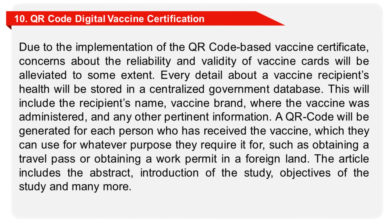Due to the implementation of the QR code-based vaccine certificate, concerns about the reliability and validity of vaccine cards will be alleviated to some extent. Every detail about a vaccine recipient's health will be stored in a centralized government database, including the recipient's name, vaccine brand, where the vaccine was administered, and any other pertinent information. A QR code will be generated for each person who has received the vaccine, which they can use for purposes such as obtaining a travel pass or a work permit in a foreign land.